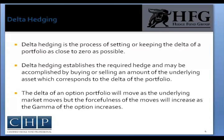Delta Hedging is the process of setting or keeping the Delta of a portfolio as close to zero as possible. In practice, maintaining a zero Delta is very complex because there are risks associated with actively hedging large movements in the underlying asset price.